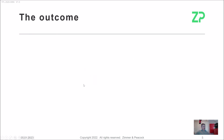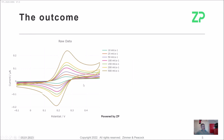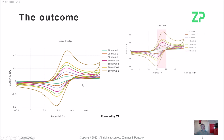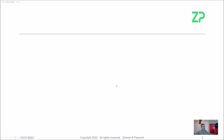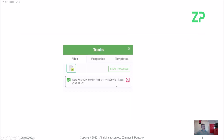The outcome of this will be that we'll take this data and use Julie to find the peak position and peak height automatically. Then we can plot the data versus scan rate and look at the relationship.